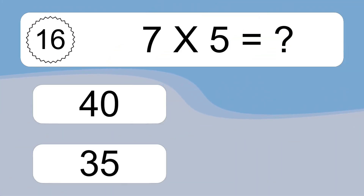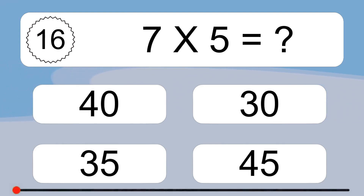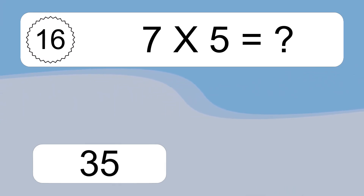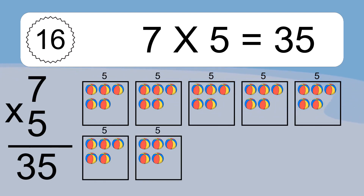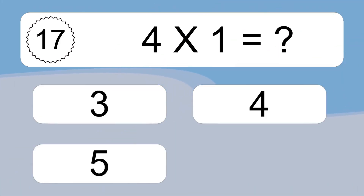Seven times five equals what? Seven times five equals thirty-five. We have seven boxes, and each box has five colorful balls inside. If you count all the balls in all the boxes together, you will have seven times five balls. This equals thirty-five balls.